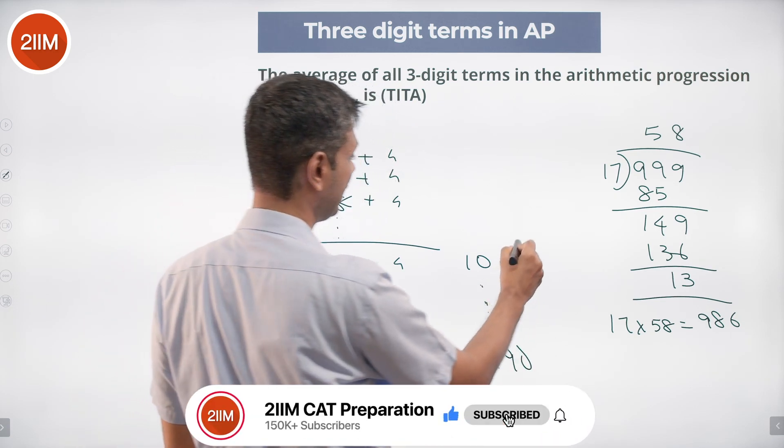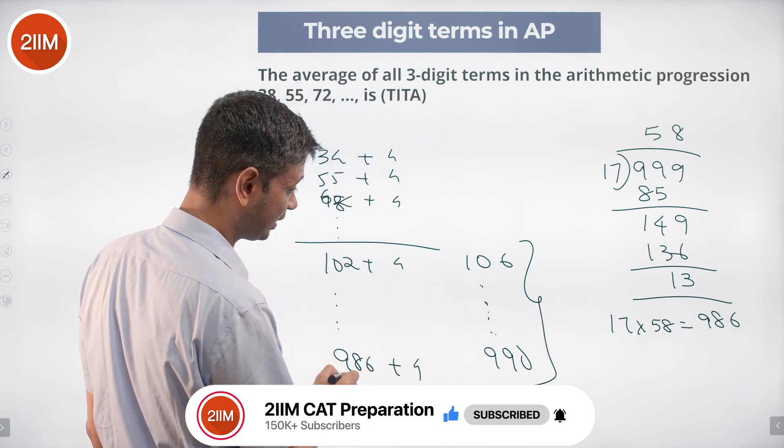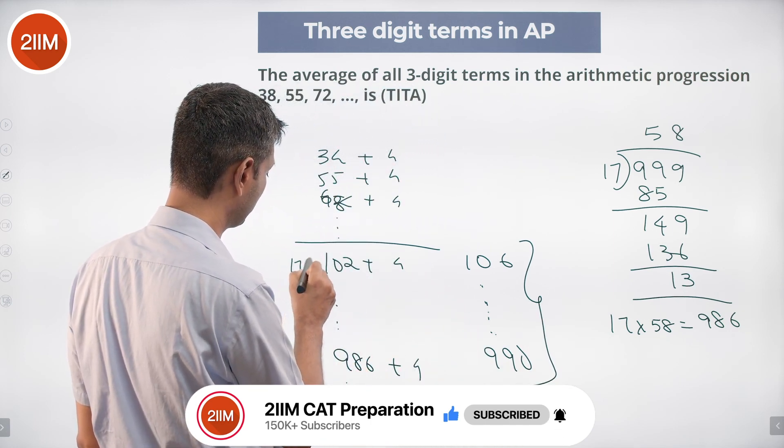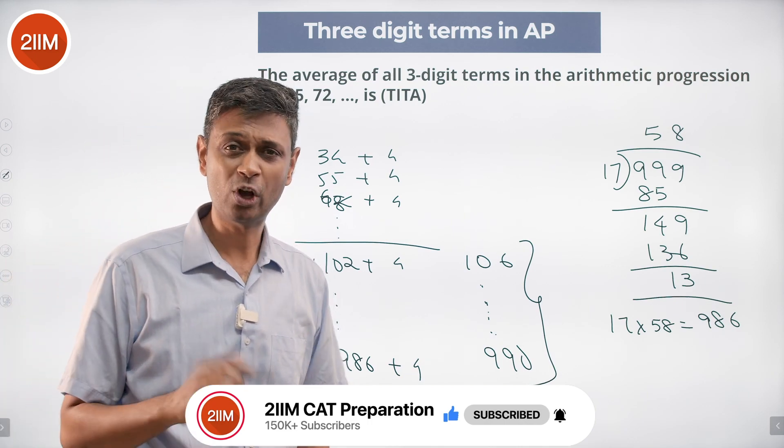How many terms are there in between? We can find that. This is the 58th term, 17 into 6, 58 minus 5 is 53 terms are there. To be honest, we don't need all of that. We want to find only the average of these terms.